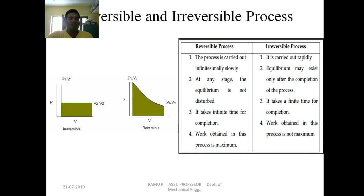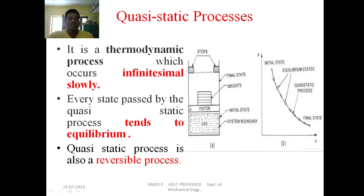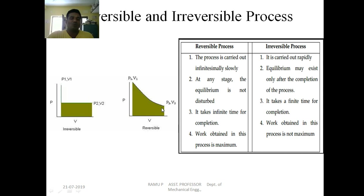Processes are also classified as reversible or irreversible. If the initial and final states are the same, the process is called a reversible process. If any disturbance occurs during the process — such as friction in a piston-cylinder movement — the system does not return to the same state, and some losses occur. This is called an irreversible process.